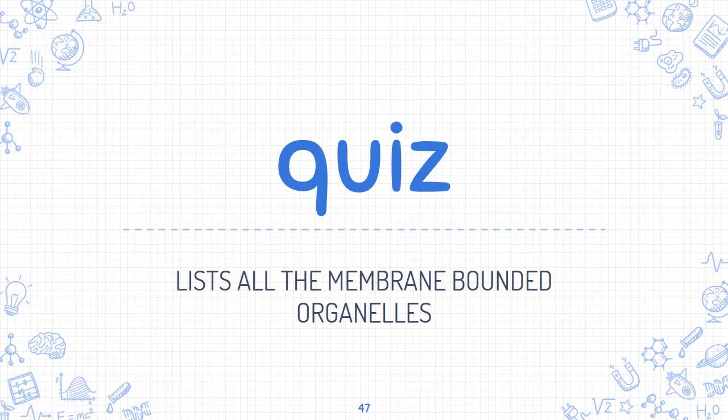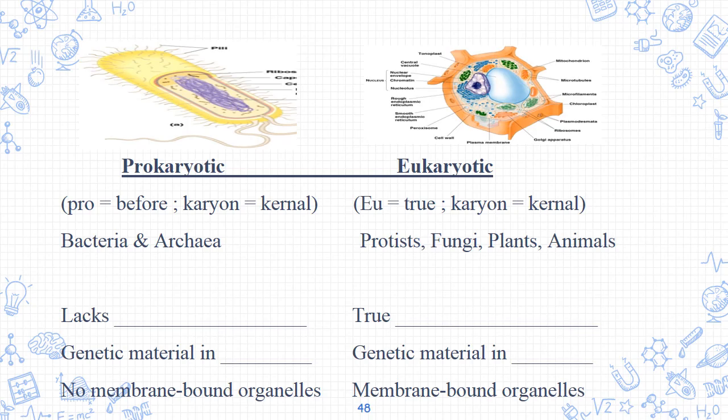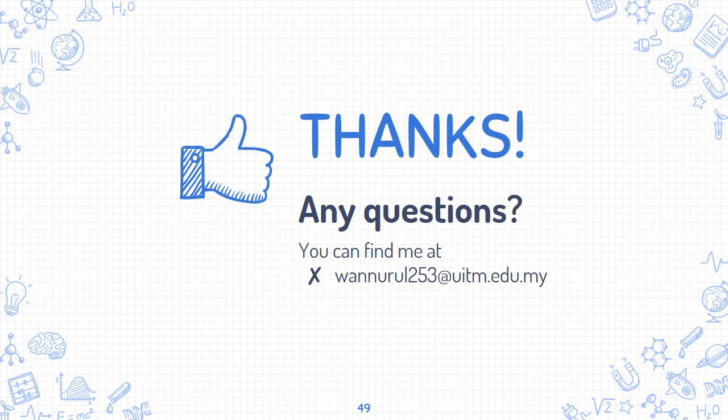This is the end of the syllabus for Chapter 5 on prokaryotic and eukaryotic cells. Don't forget to do the quiz exercise once you have finished studying this chapter. Thank you and see you in the next chapter.